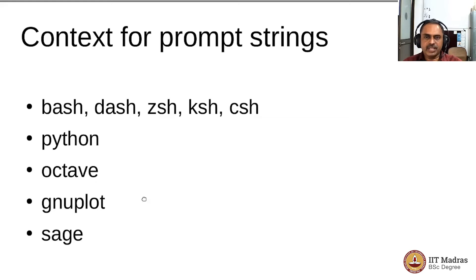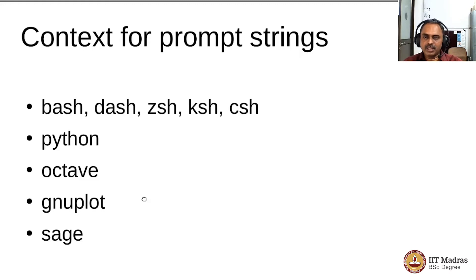There are also other command line utilities such as Python, which can be run on the command line to try out certain pieces of code before you put them together in a Jupyter notebook or in a Python script. The prompt for Python, Octave (a MATLAB-compatible numerical package and language on Linux), gnuplot (a powerful plotting tool), and SageMath (a symbolic computing package comparable to Mathematica or Maple) — all these languages will have a command line environment where the prompt can be different and can also be customized.